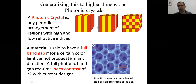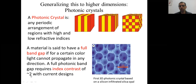This idea can be generalized beyond one dimension to generate a photonic crystal — first thought of in higher dimensions by Eli Oblanovich about 40 years ago. A photonic crystal is any periodic arrangement of regions with high and low refractive indices. The Bragg reflector, or quarter-wave stack, is a one-dimensional photonic crystal. Generalized to three dimensions, under some conditions it has a peculiar property called a full band gap — light cannot propagate in any direction for a certain color. A full photonic band gap requires an index contrast of about two.